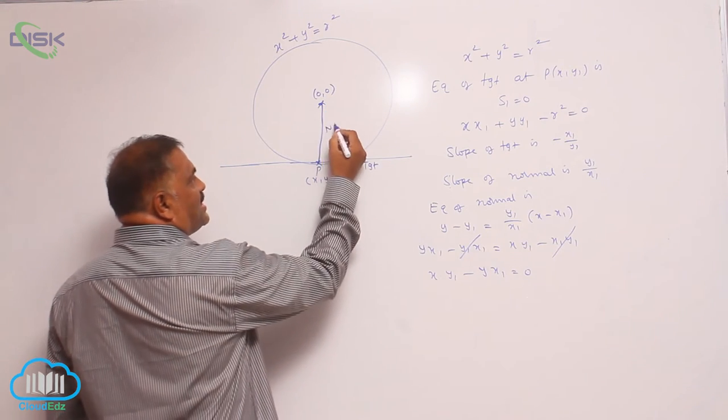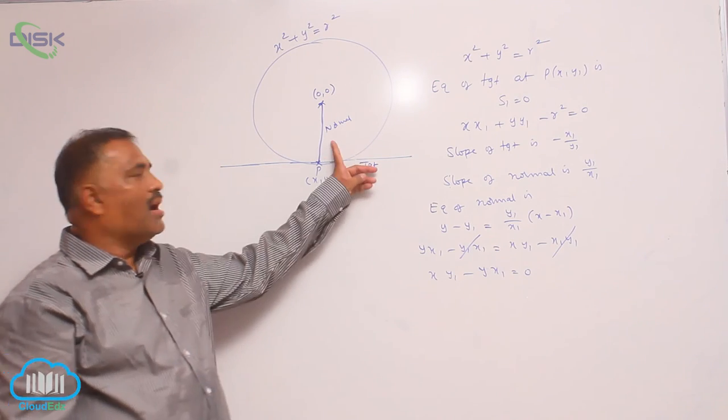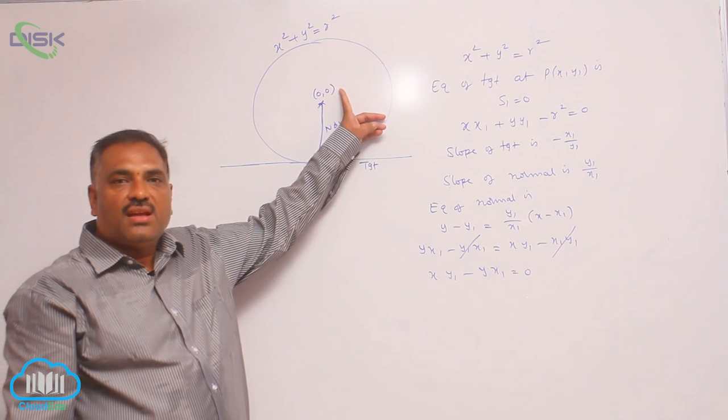This is tangent and this is normal. From this discussion, it is very clear that normal always passes through center of the circle.